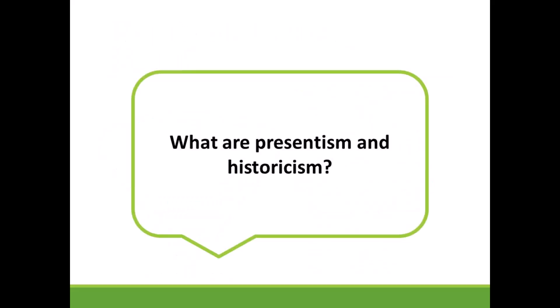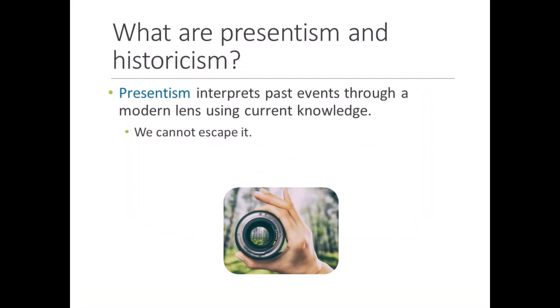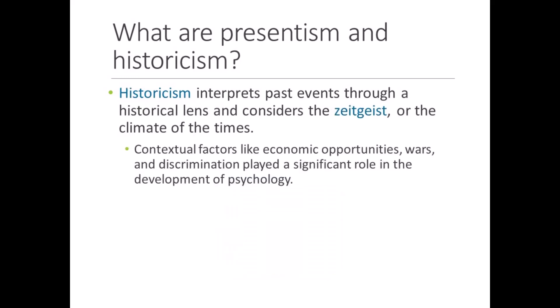What are presentism and historicism? Each of these concepts is a perspective or a way of thinking about history. Presentism is interpreting the past in terms of the present — it means we view the past through a modern lens, using our current perspective and knowledge about the world. Historicism is a different approach. It considers the context within which historical events occur. This context is called the zeitgeist — the climate or spirit of the times. You'll see this word many times in these lectures.